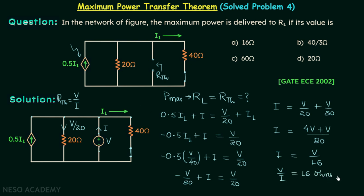This is our Rth. For maximum power, RL should equal Rth, so RL should equal 16 ohms. This is our answer - option A is the correct option.